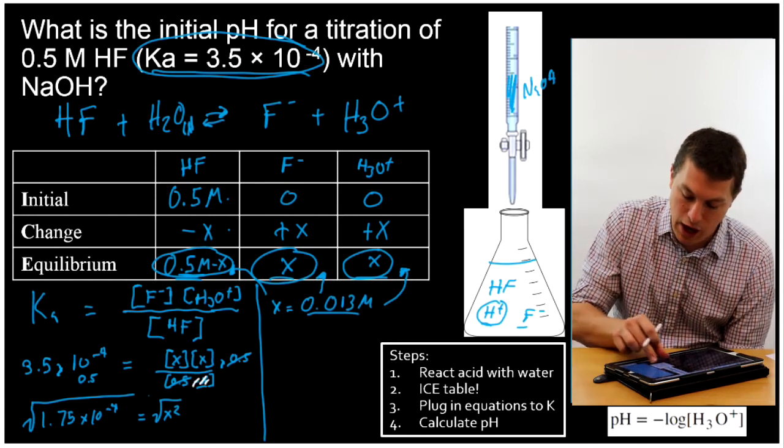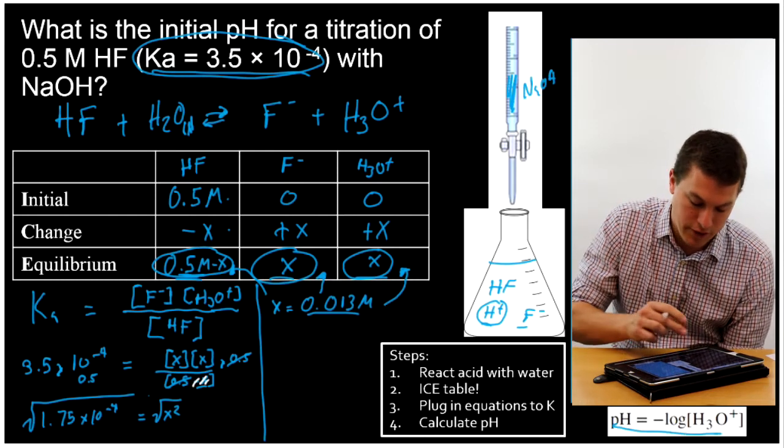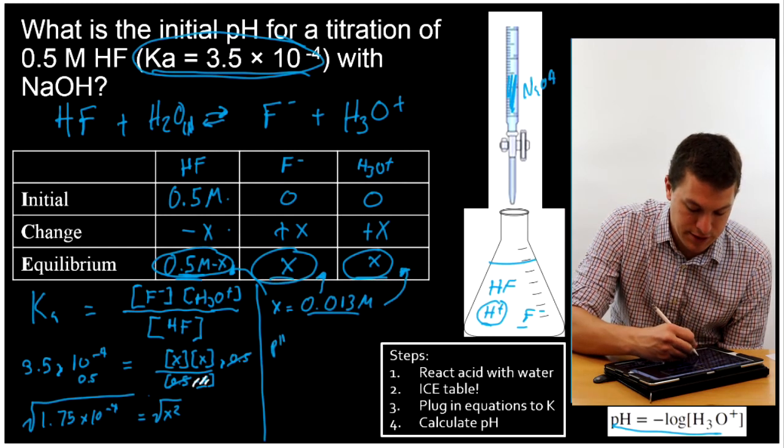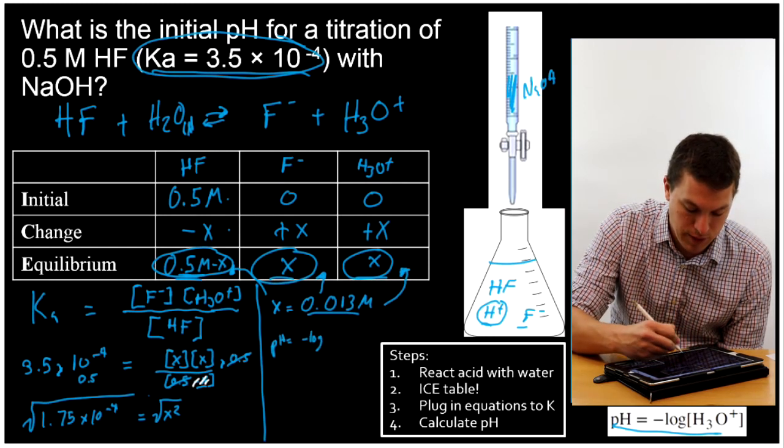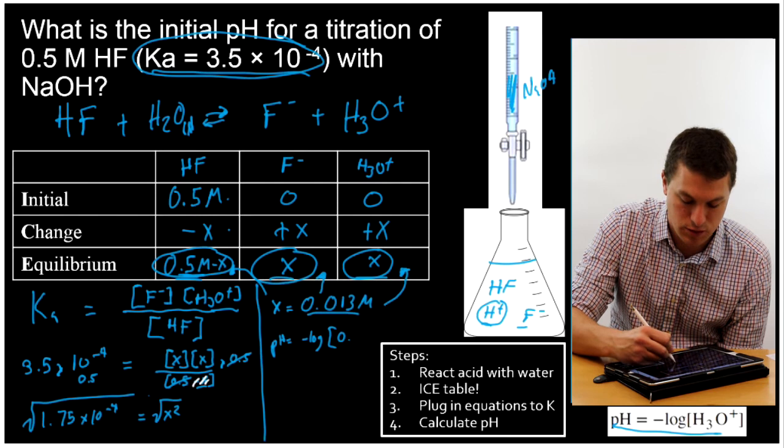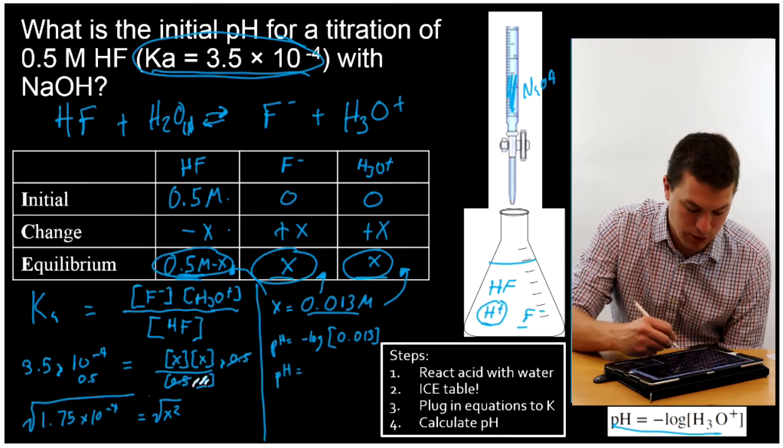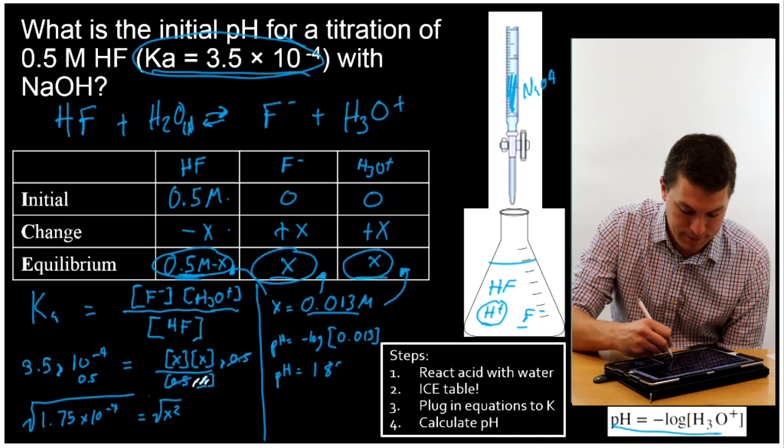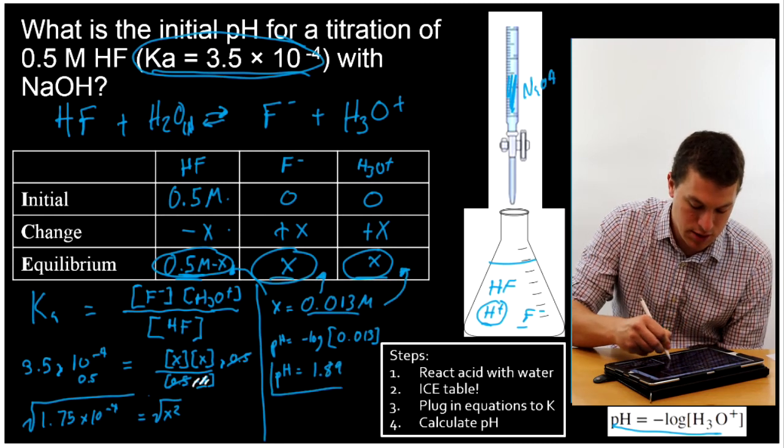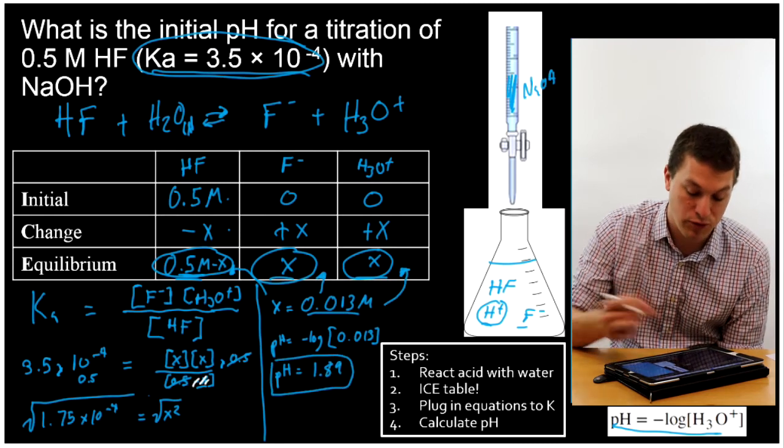And we might remember that our pH is equal to negative log of our hydronium ion concentration. So that's the last step here. pH is equal to negative log of my hydronium ion concentration, which is 0.013. When I plug that into my calculator, what I will get is 1.89. So that's the pH at the bottom of my flask there before I start the titration.